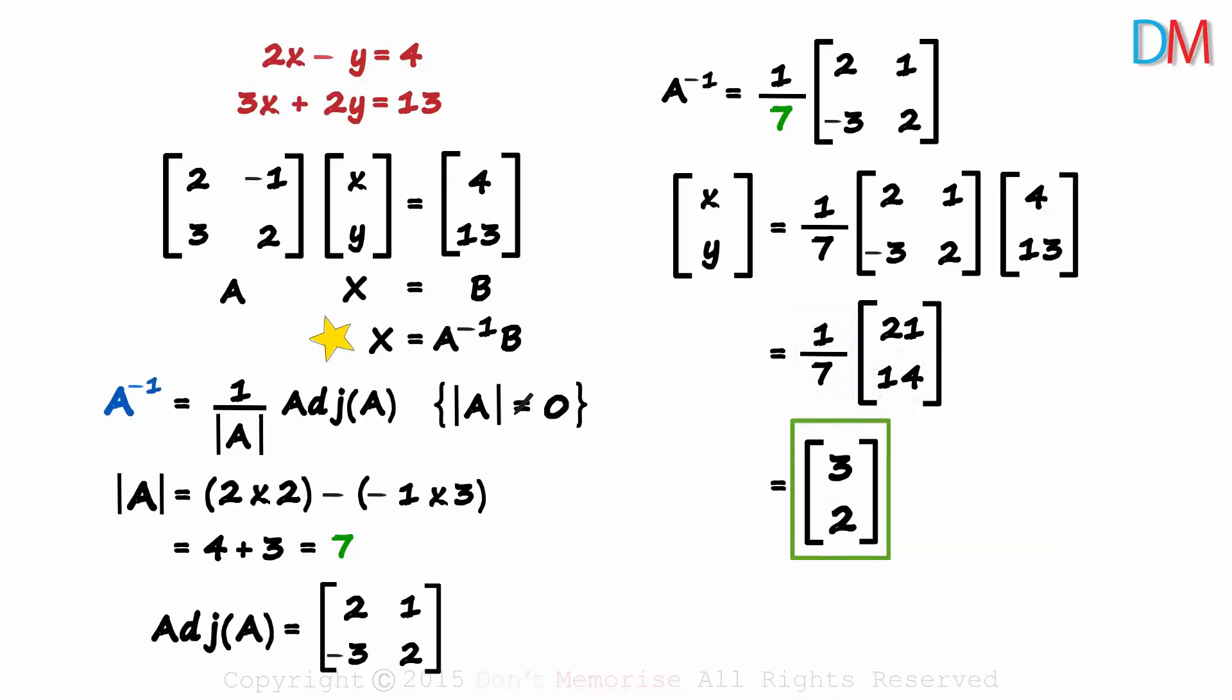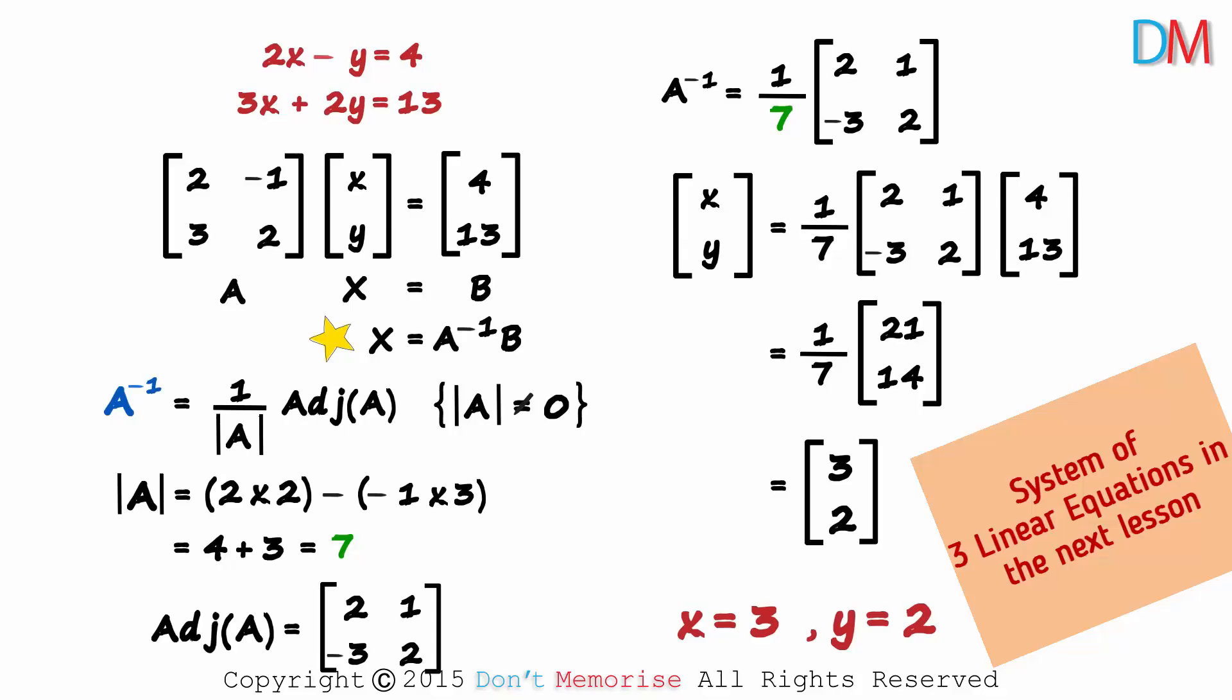We have got the matrix X. The variable X will be equal to 3 and the variable Y will be equal to 2. That's how we solve a system of linear equations using matrices. We write it in the matrix form, then we write X like this. Then we find the A inverse multiplied with matrix B to get the variable values. In the next lesson, we will try to solve a system of 3 linear equations using matrices.